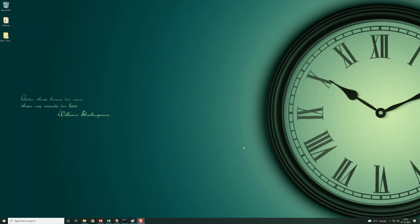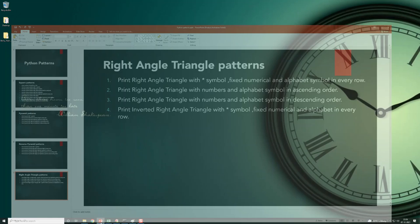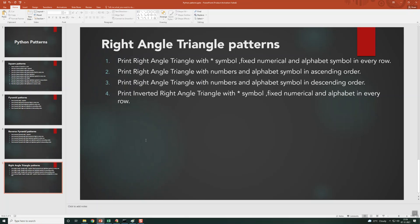Hi guys, this is Bhaskar Berry. Welcome to my YouTube channel. In this video, we are going to see how to print the inverted right angle triangle with star symbol, fixed numerical values, and alphabets.